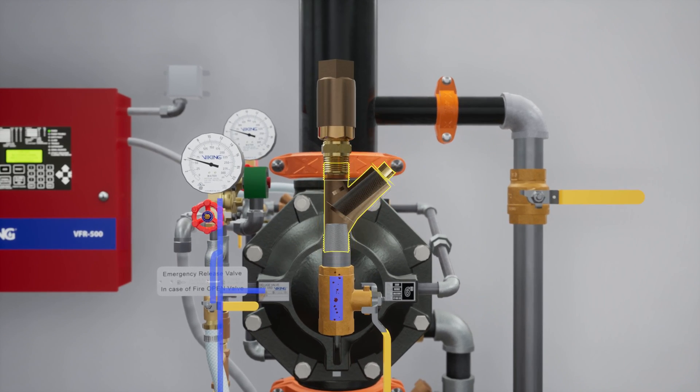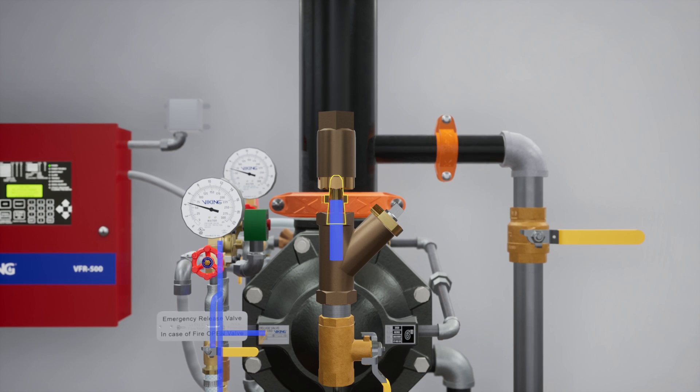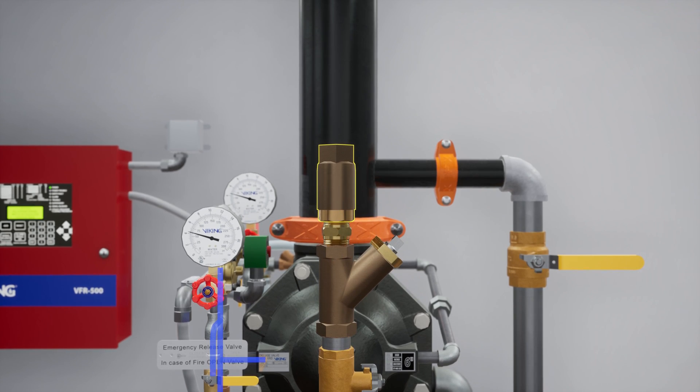The Y strainer keeps debris from entering the restricted orifice. The restricted orifice reduces the rate at which water can enter the prime chamber, ensuring the prime water will drain faster than it can be supplied. The check valve only permits water to enter the priming chamber, allowing prime chamber pressure to be maintained.